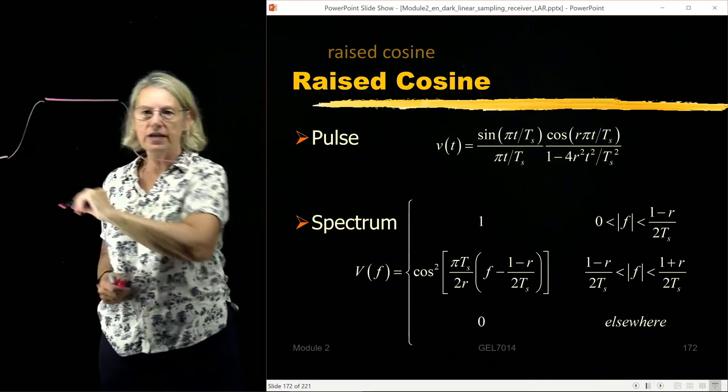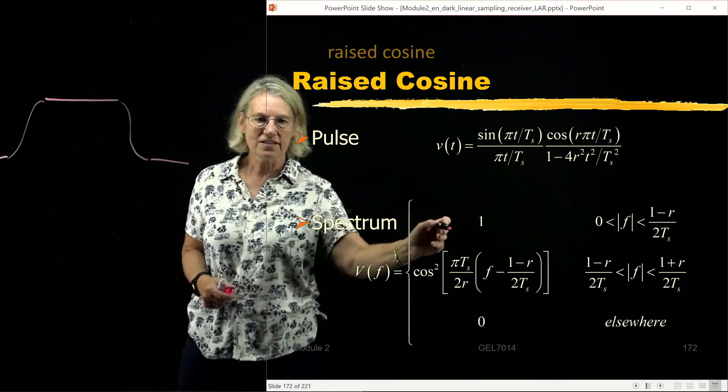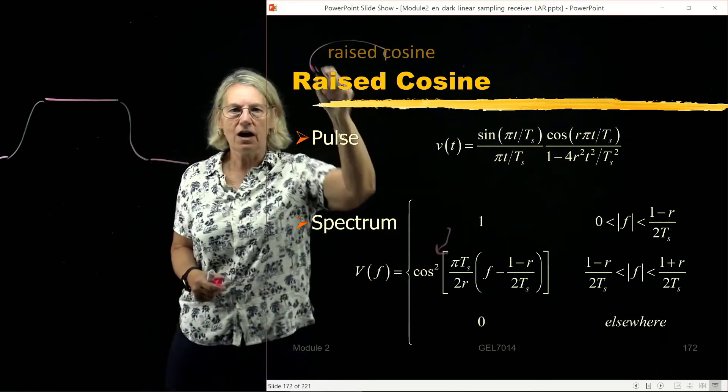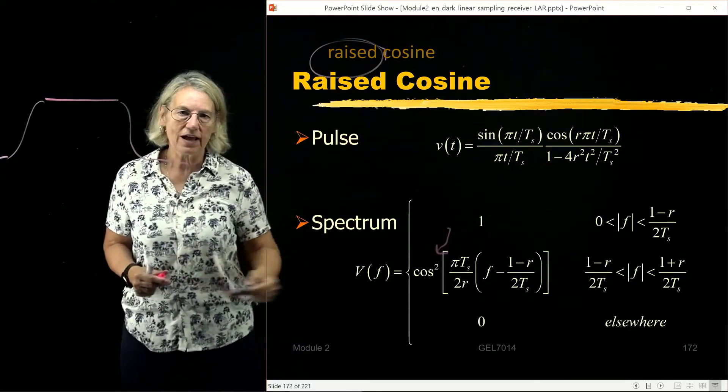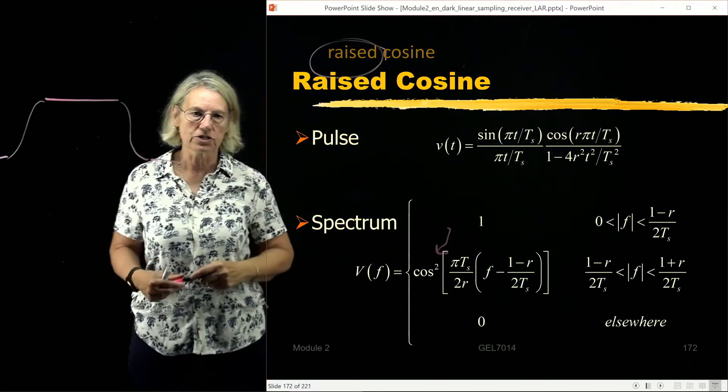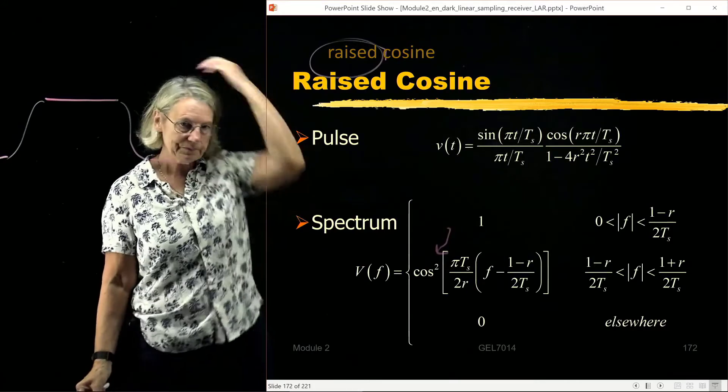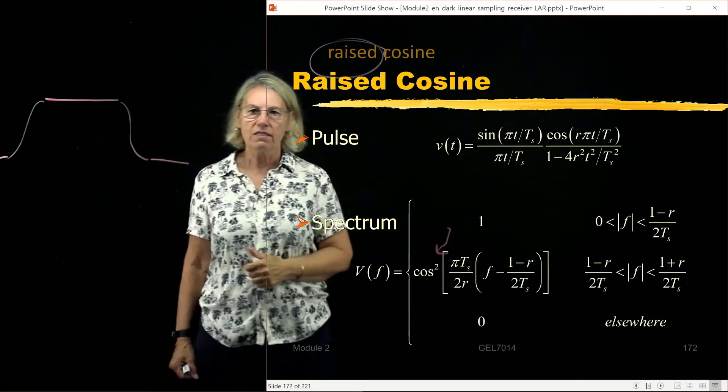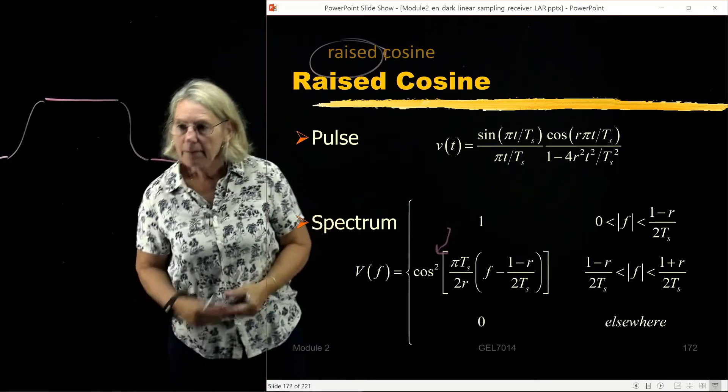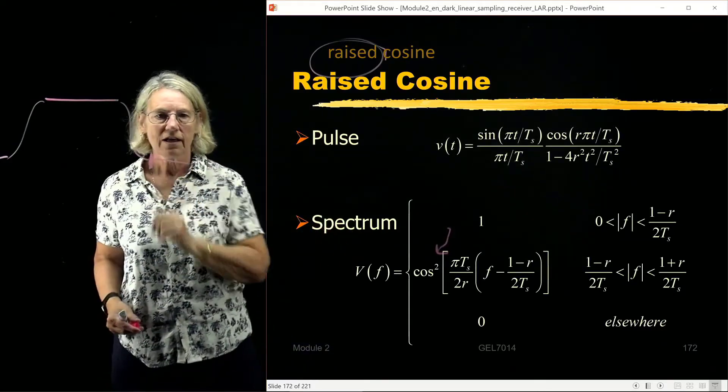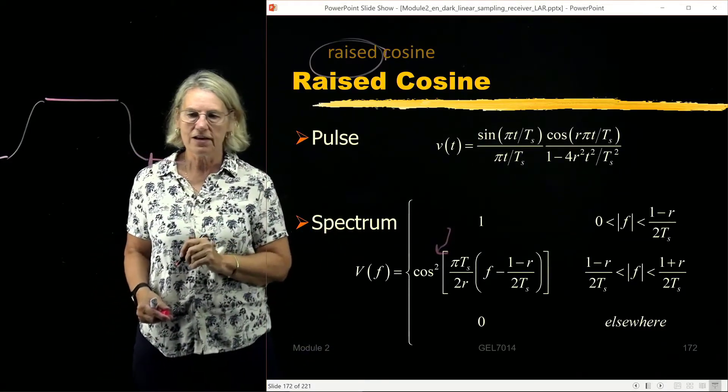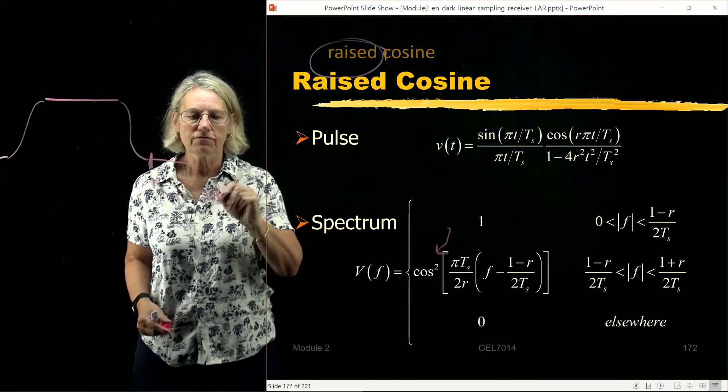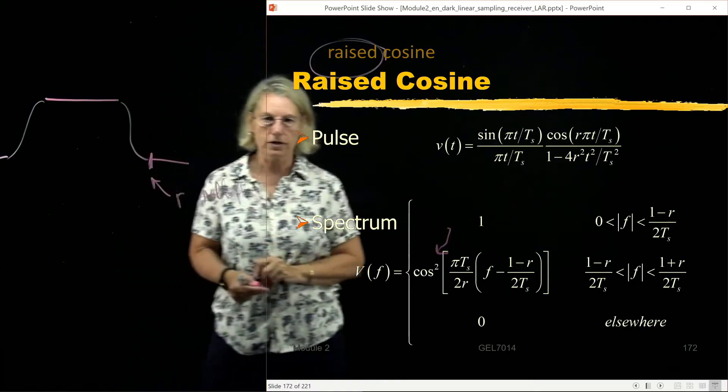In between is where this cosine squared term comes in, and that's where we call it a raised cosine. So we have a cosine function here which is squared, which we can think of as a raised cosine. The final maximum bandwidth here is determined by the R factor; the roll-off gives the maximum frequency support.